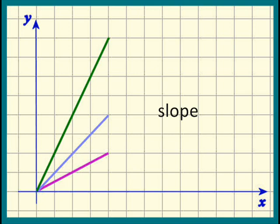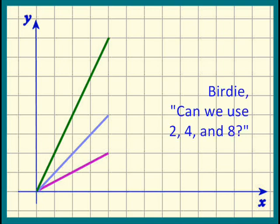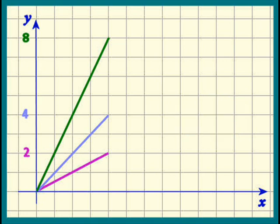Suppose you're the mathematician. Can you think of a number that would describe the steepness of a line? Yes, Birdie. Can we use two, four, and eight? Good try, Birdie. But I'm afraid that's not going to work.